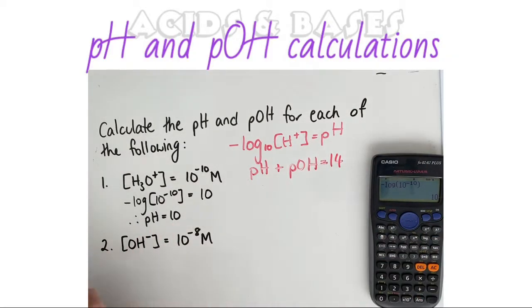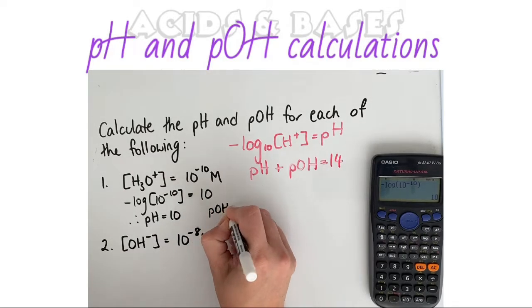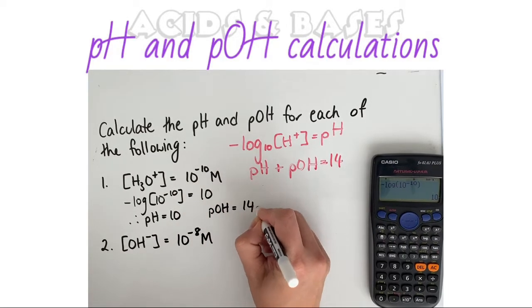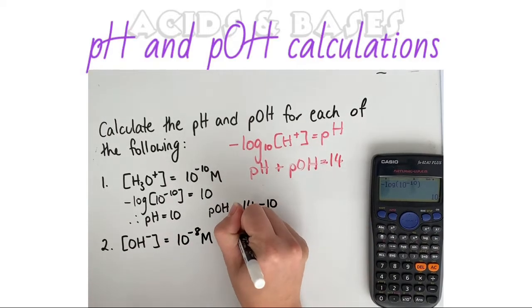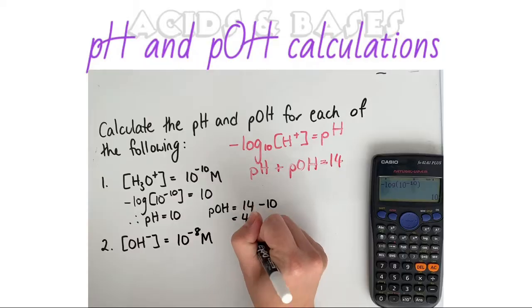For this example now to find the pOH, the pOH is going to be 14 minus our pH which is 10. So that gives us a pOH of 4.